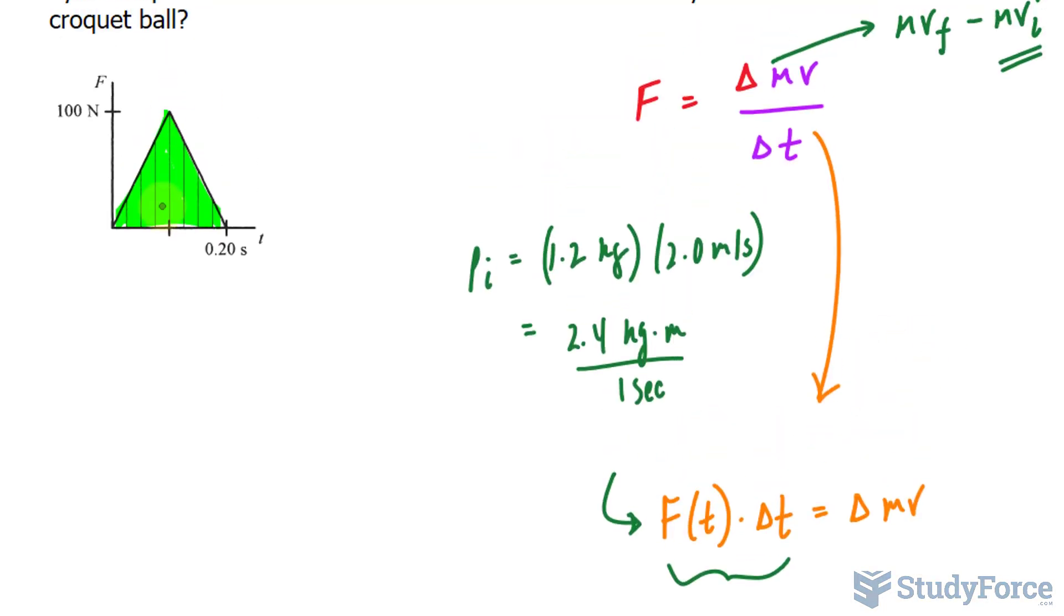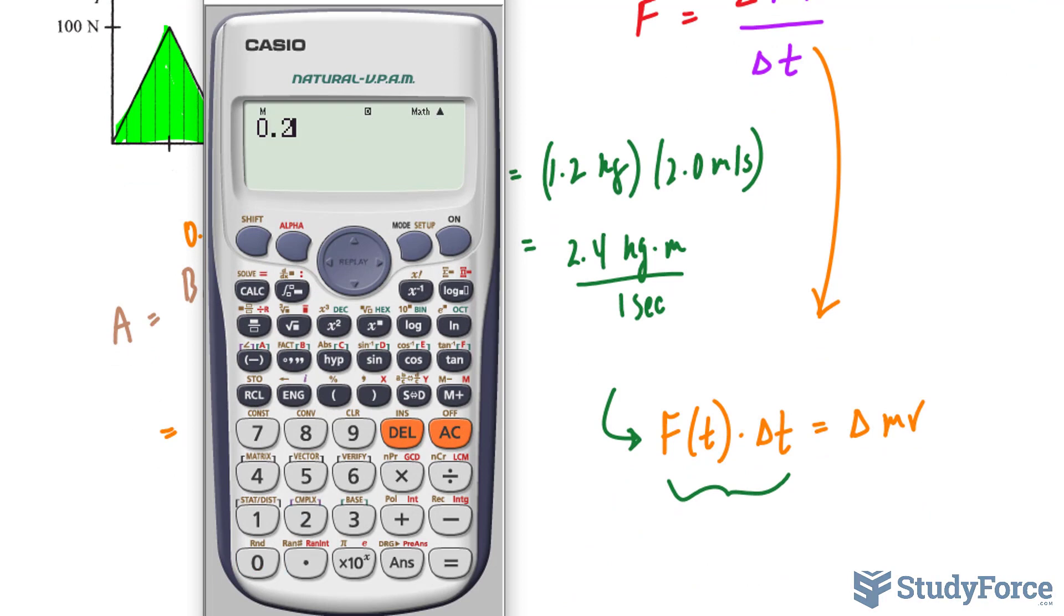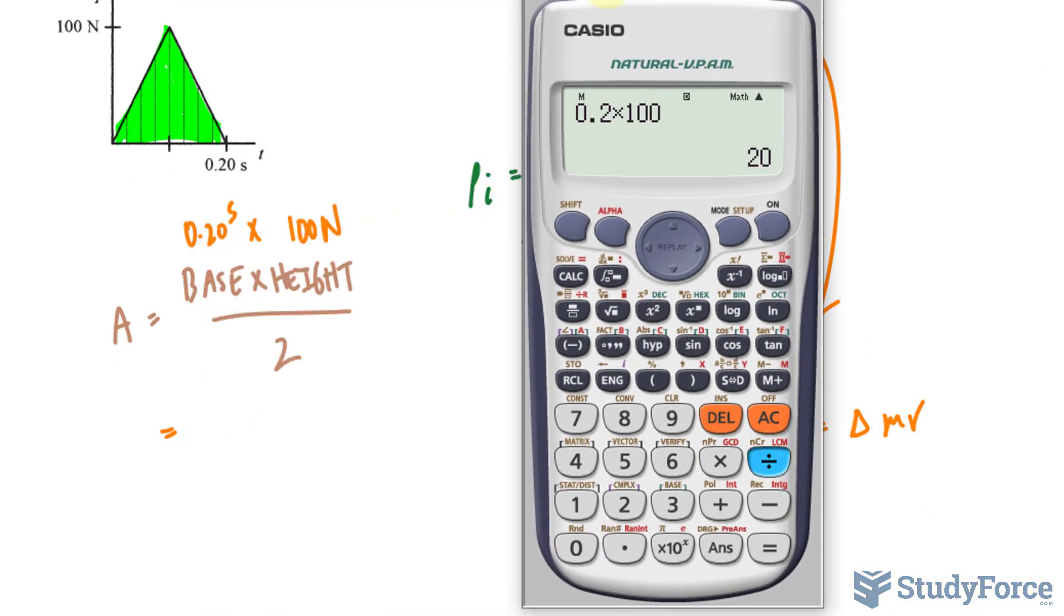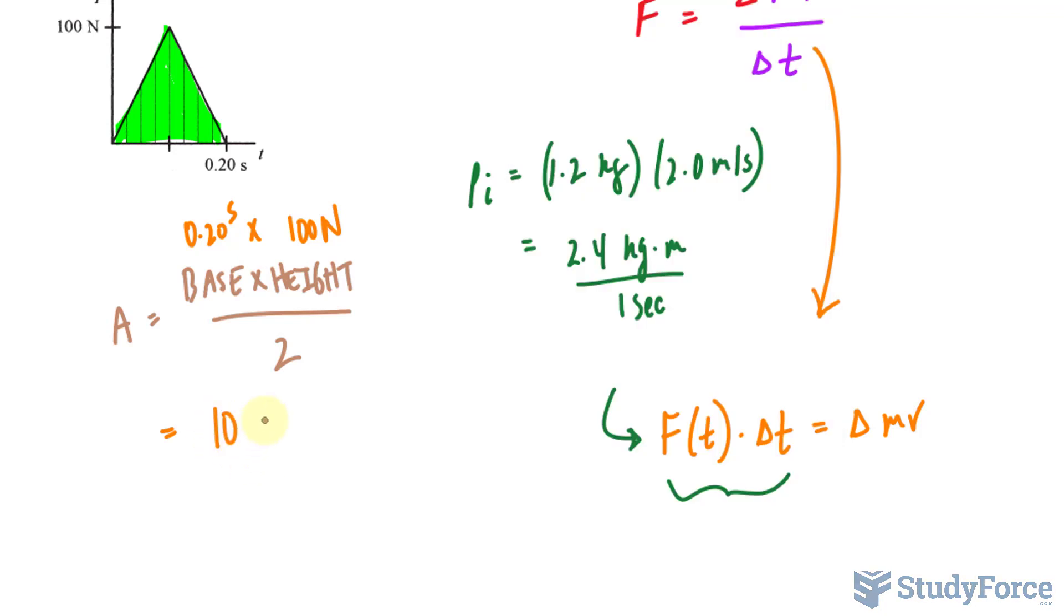How do we find the area of a triangle? The area of a triangle is base times height divided by 2. This is something we learned very early in our lives. The base is from here to here - that's a distance of 0.20. The height is 100 newtons, and dividing that by 2 gives us the area we're looking for. Using my calculator, 0.2 times 100 divided by 2 makes 10 - 10 newtons times seconds.